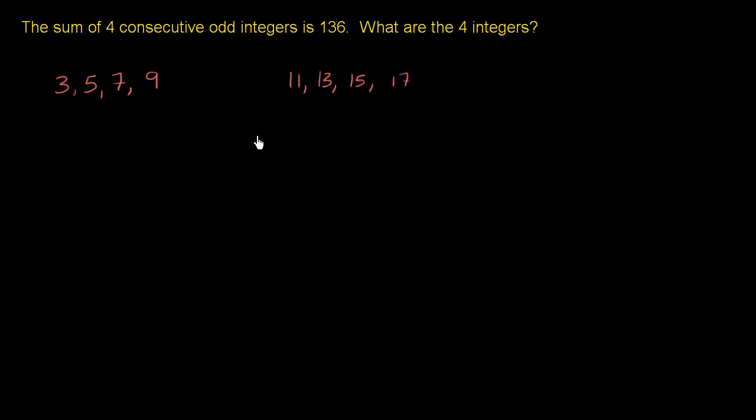An example of non-consecutive odd integers: if someone went from 3 straight to 7, these are not consecutive. The next odd integer after 3 is 5, not 7. So these are examples of consecutive odd integers, these are not consecutive odd integers. So with that out of the way, let's actually try to tackle this question.